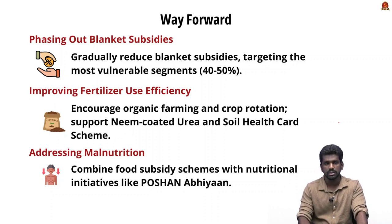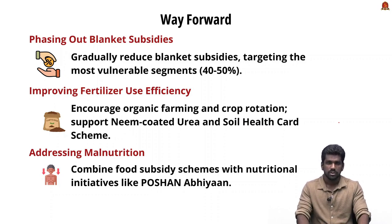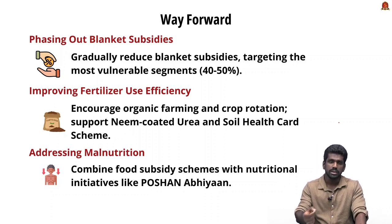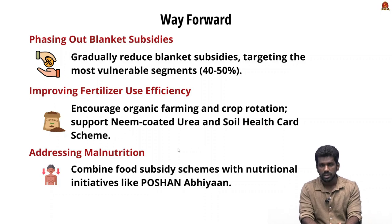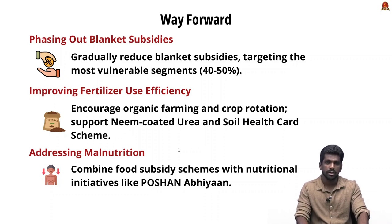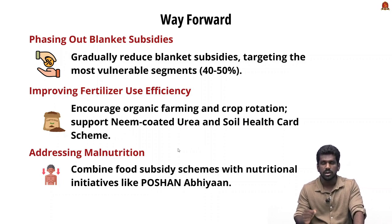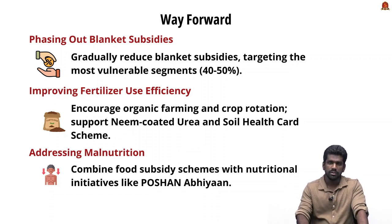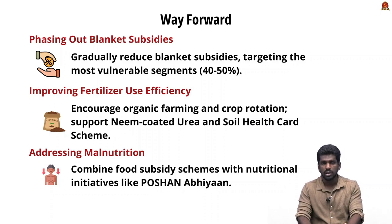Gradually reducing the scope of blanket subsidies and focusing only on the most vulnerable segments of society will increase the efficiency of food subsidies in India. Regarding fertilizer subsidies, promoting balanced fertilizer use by encouraging alternatives like organic farming and crop rotation is important. Support schemes like neem-coated urea and the Soil Health Card scheme also help in this regard. Integrating food subsidy schemes with nutritional initiatives like POSHAN Abhiyaan can address broader issues of malnutrition.